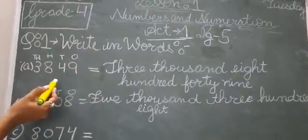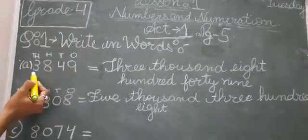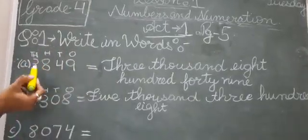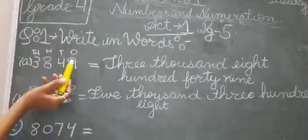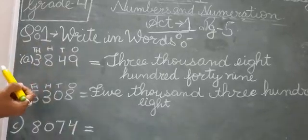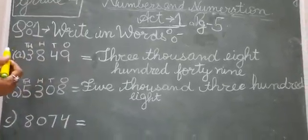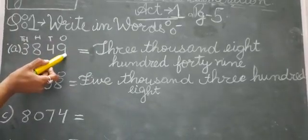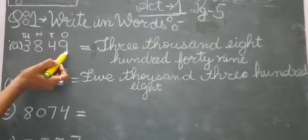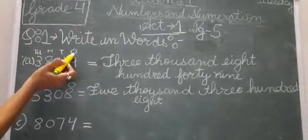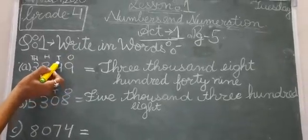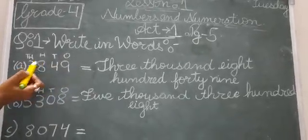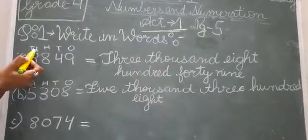First of all, you need to know your place values — which digit is in which place. 9 is in the ones place, 4 is in the tens place, 8 is in the hundreds place, and 3 is in the thousands place.